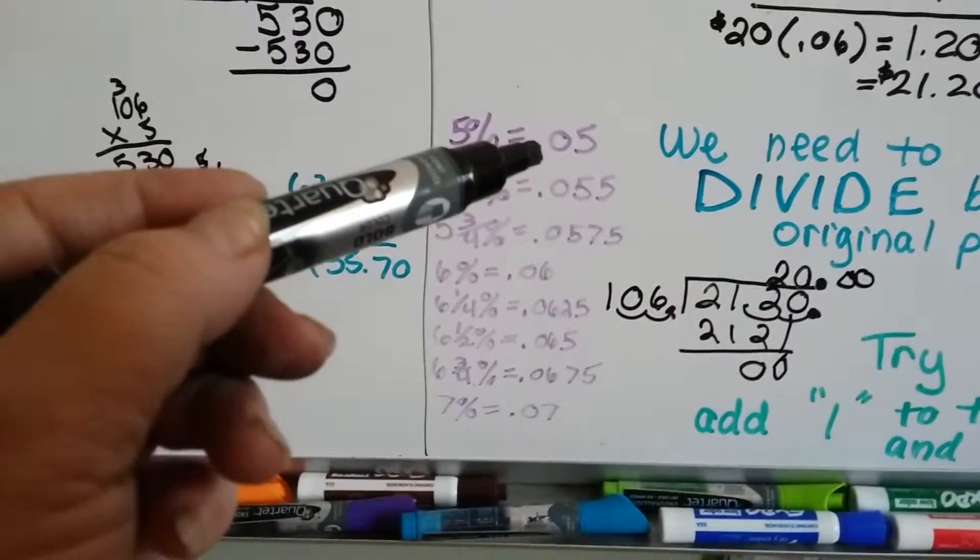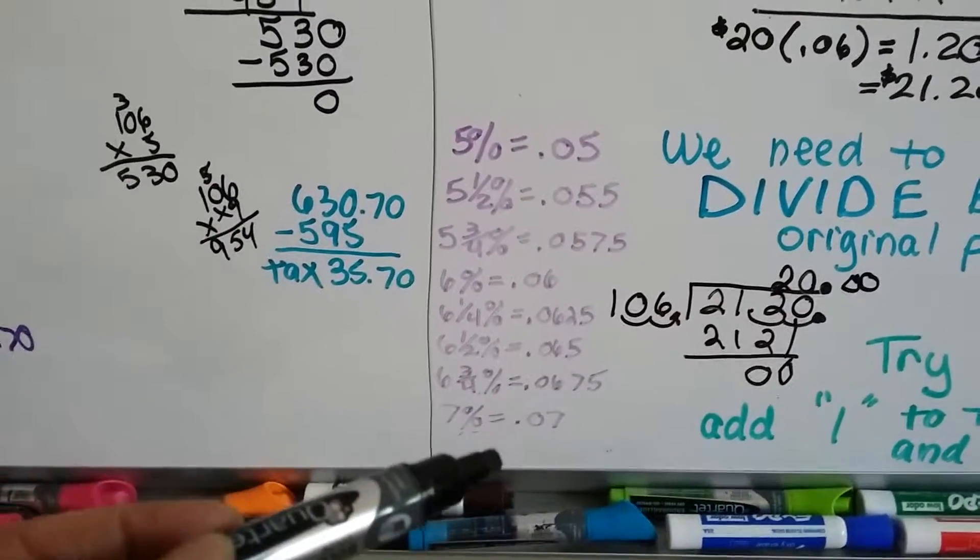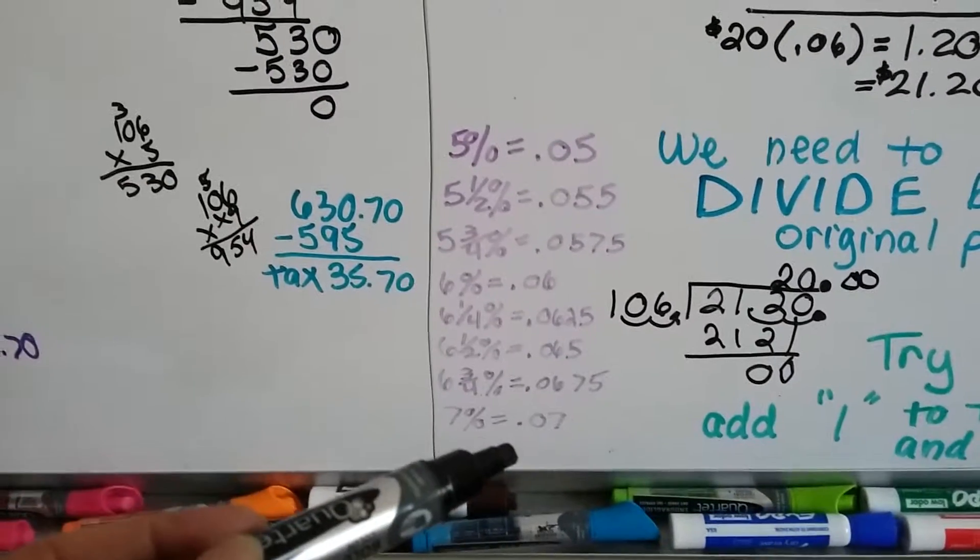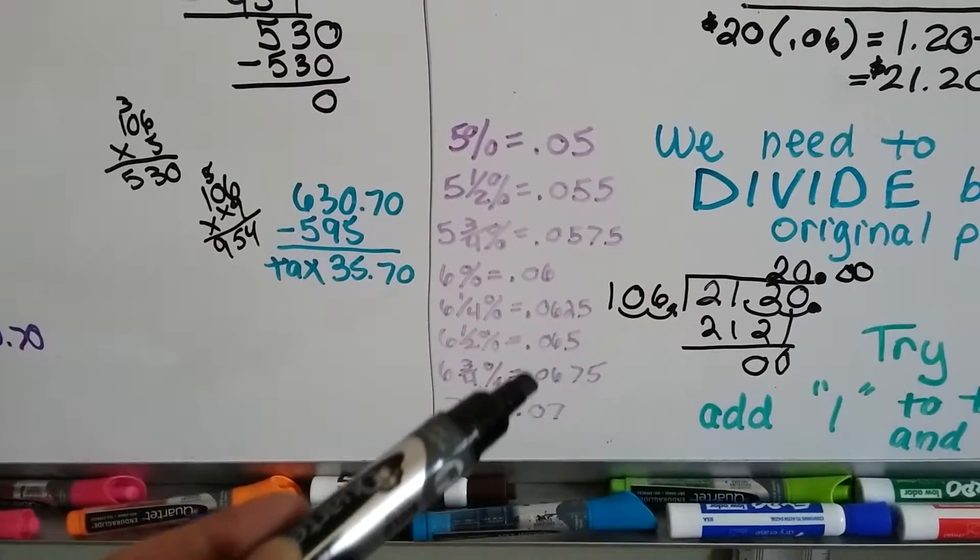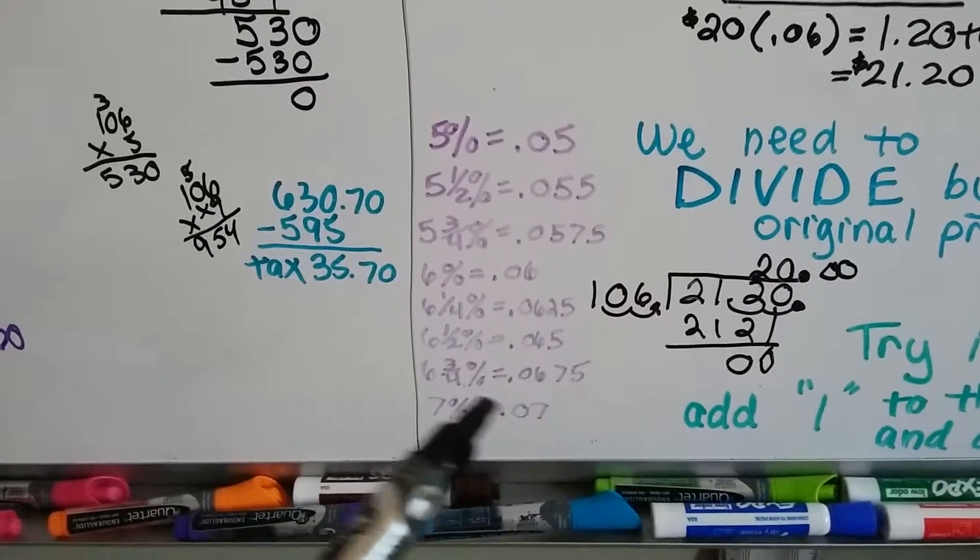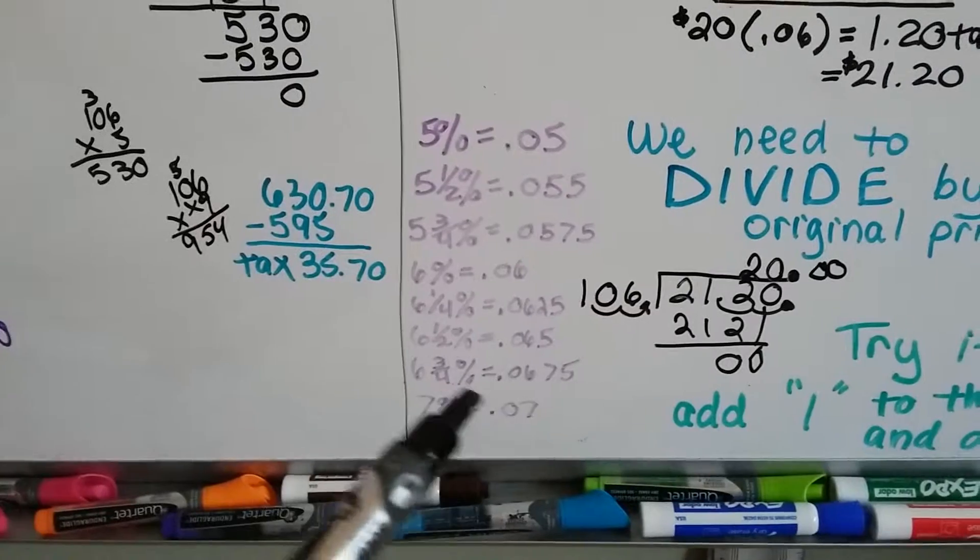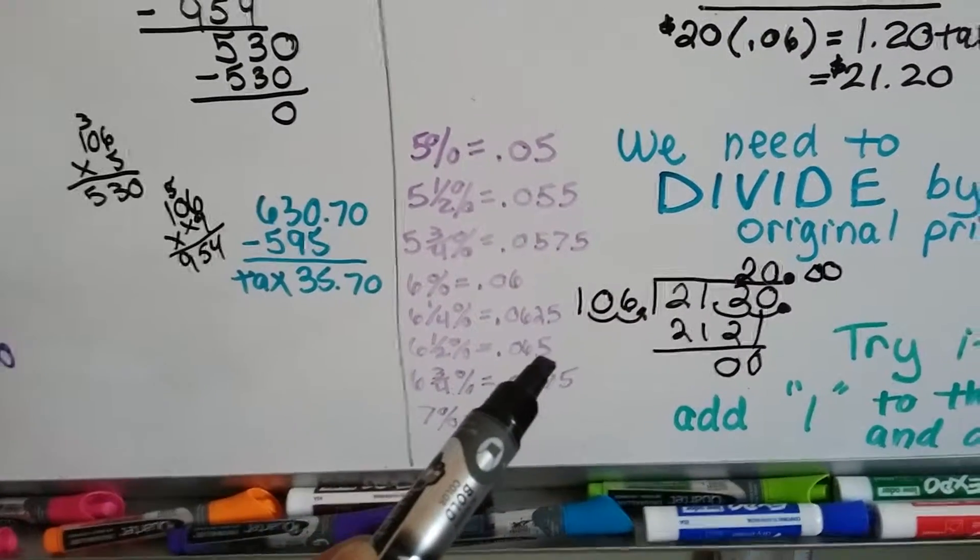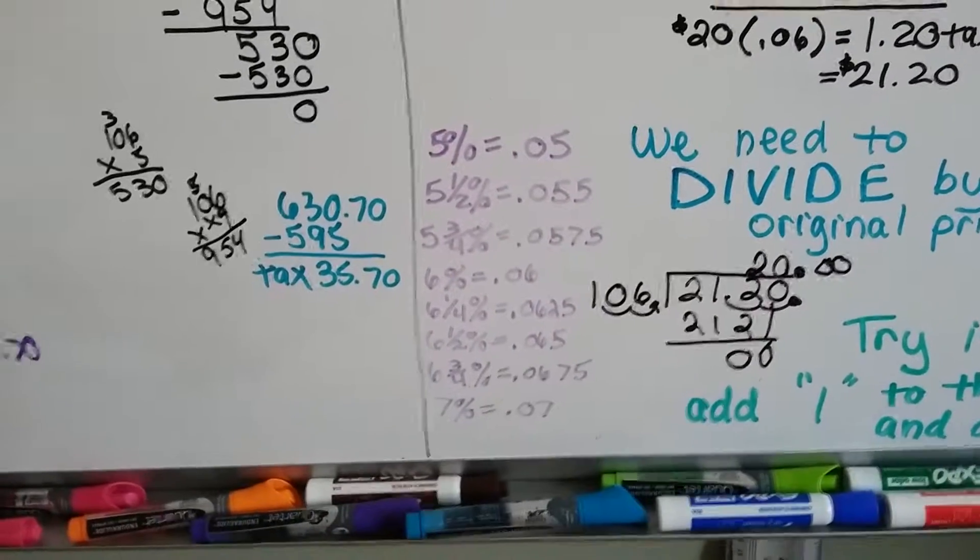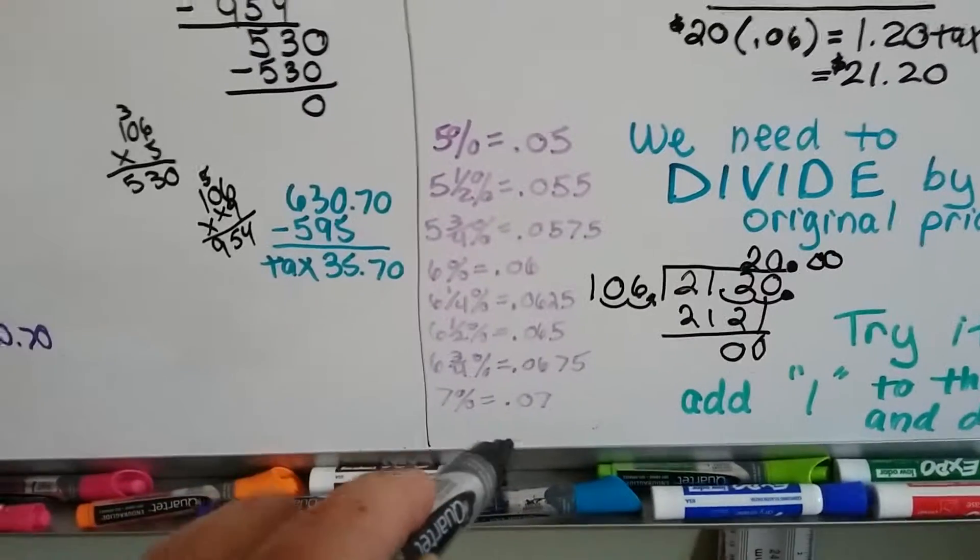These are the decimal points that would represent the sales tax if you want to multiply. Like 6.75 would be .06 with a 7.5 at the end of it for the three-fourths. And 6.5 would be .06 with a 5 after it to represent the half. And then put a 1 in front of these.